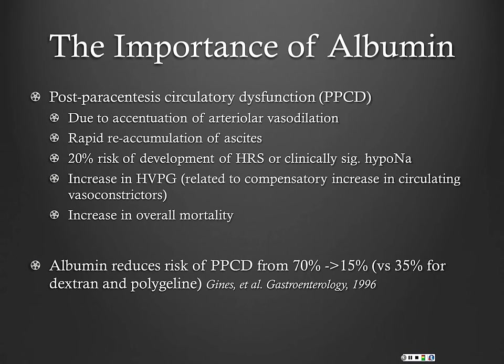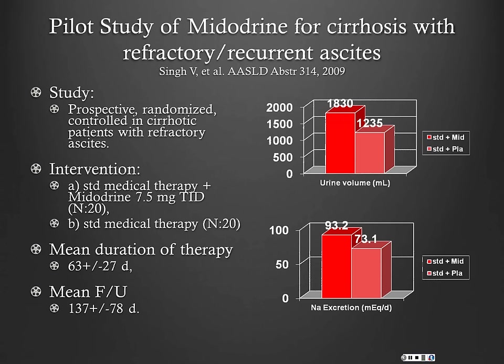Albumin reduces the risk of circulatory dysfunction from 70% down to about 15%. A study comparing albumin to dextran and polygeline — a hexastarch — showed albumin was far superior: dextran and polygeline only got circulatory dysfunction down to about 35%.